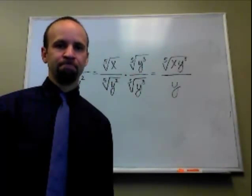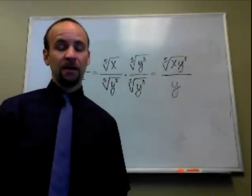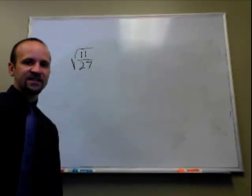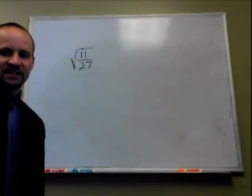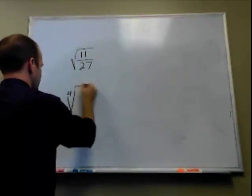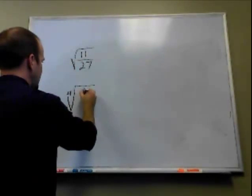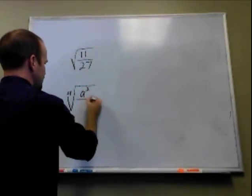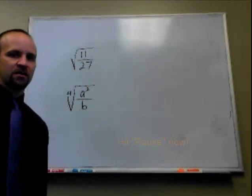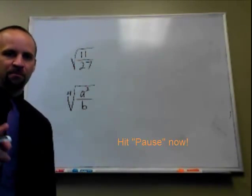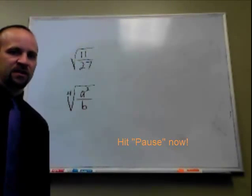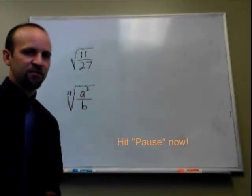Now I'm going to give you a couple to try. The first example is the square root of 11 over 27. The second example is the fourth root of a squared over b. Hit pause now, simplify these as much as possible, and then hit play to see if you did it correctly.